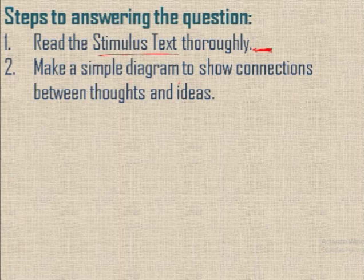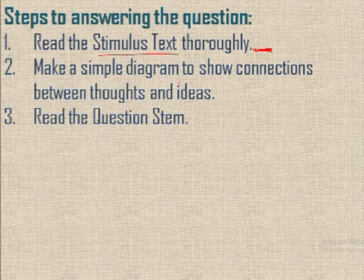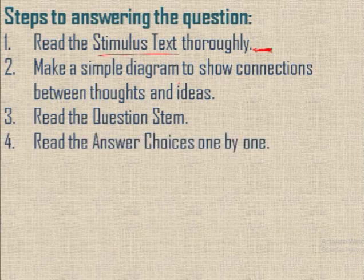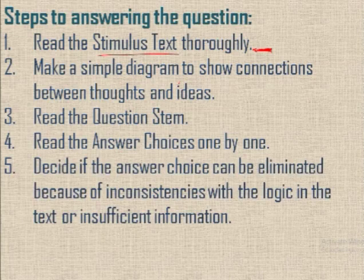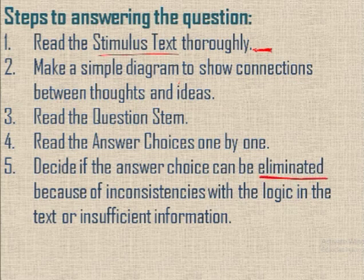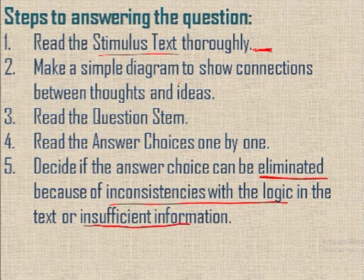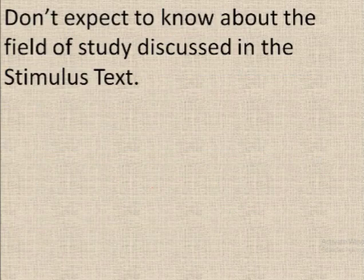Make a simple diagram if possible to show connections. Then read the question stem and read the answer choices one by one and try to eliminate the wrong choices. Wrong choices may be due to inconsistencies in the logic or because there is insufficient information — if there is any such thing, just eliminate the choice. Then decide on the correct choice.